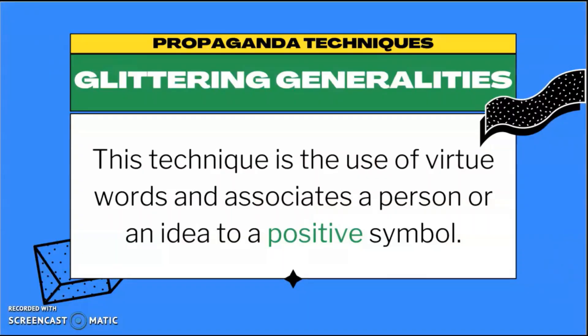If we apply that to products or establishments — take BDO, for example. Their tagline, 'We find ways,' appears like a glittering generality. For SM Malls, they say 'We've got it all for you.' So something positive like 'We've got it all for you' or 'We find ways' — the idea is technically giving your product or quality an associated positive symbol.